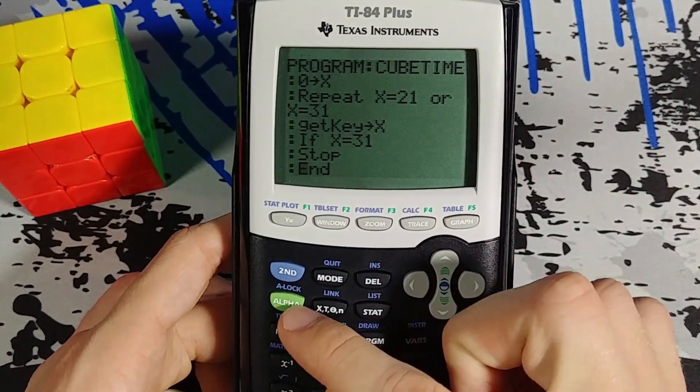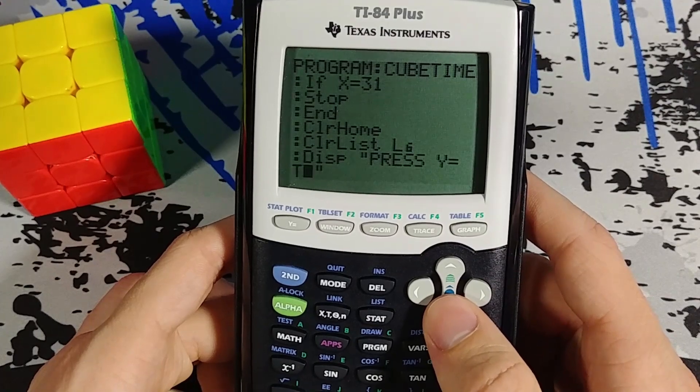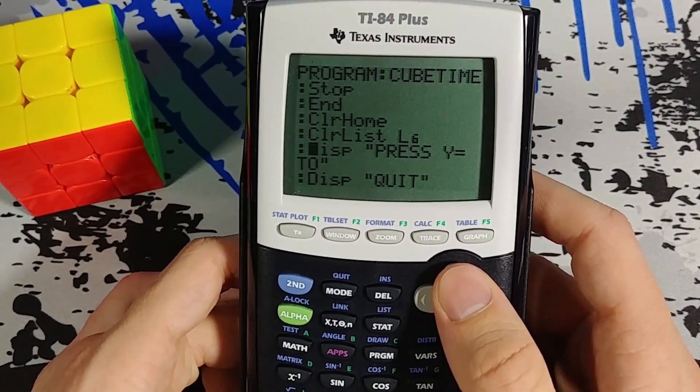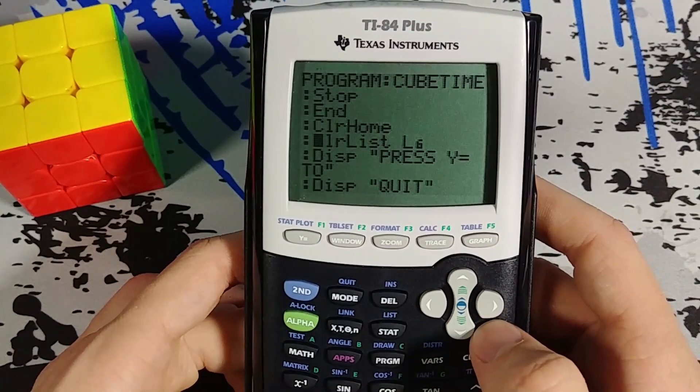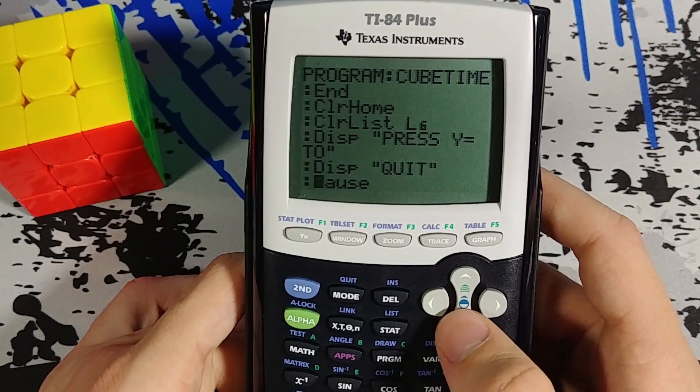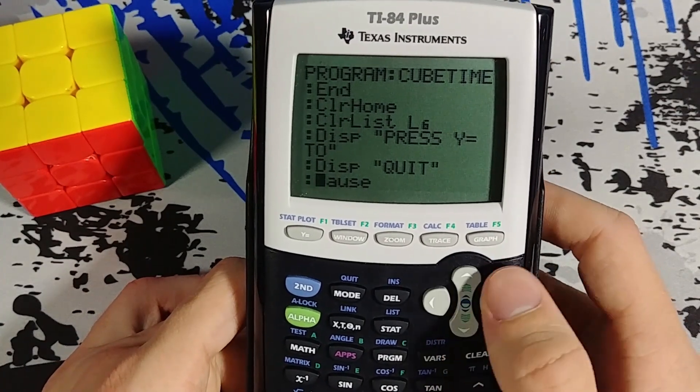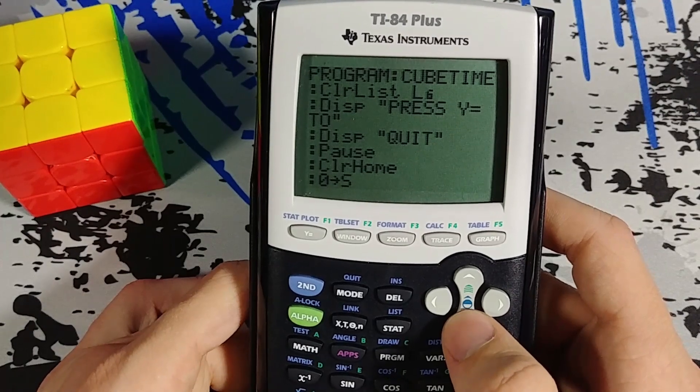Now of course if I say no, it's going to end the program. If not, it's just going to stop the repeat loop and we'll continue on. So I clear the home again. Then I'm going to clear list 6. And then it's going to give me my press y equals to quit. Pause. Clear the home again.